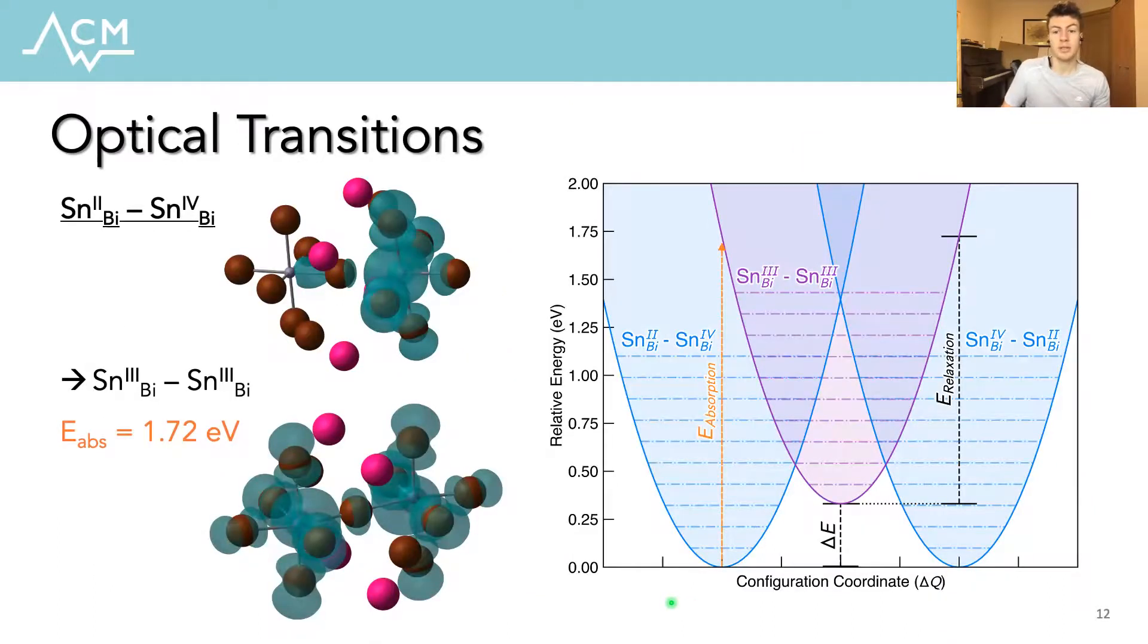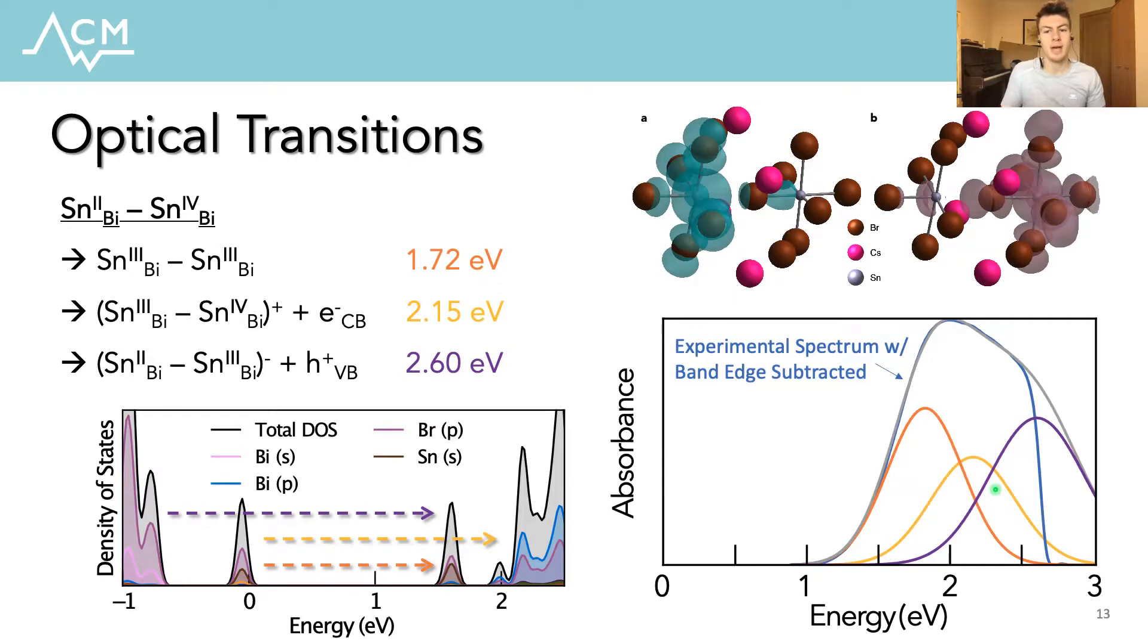The calculation of the intervalence charge transfer band, so from the occupied lone pair state to tin 4 plus, is actually quite a bit difficult as it requires us to constrain the occupation of the electronic states in order to prevent relaxation down to the ground state electronic configuration. From calculating the vibrational relaxation energy of the optically excited state, we can use Marcus Hush theory of electron transfer to also predict the vibrational broadening of this strong absorption peak. So these calculated energies and broadening gave excellent agreement with the experimental absorption spectrum shown here, providing us a valuable insight to the atomistic mechanism of this massive sub band gap absorption enhancement.